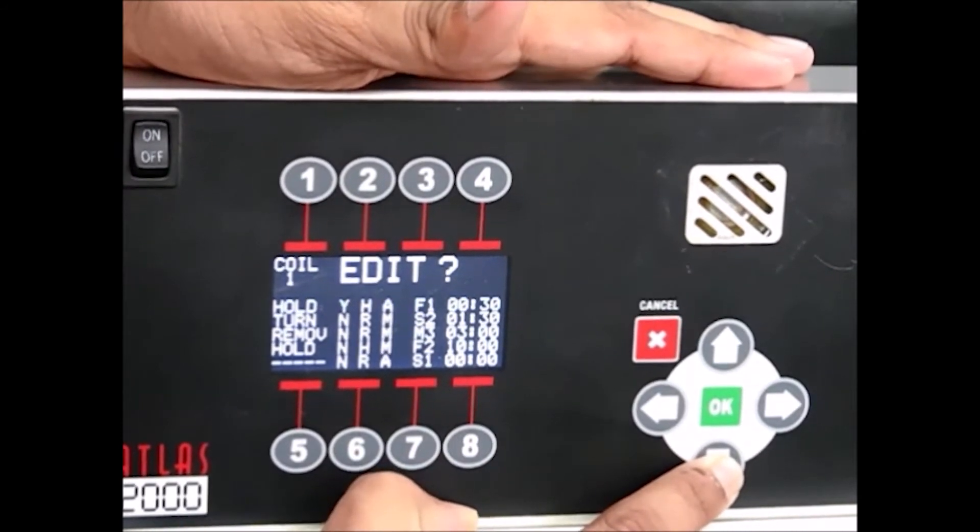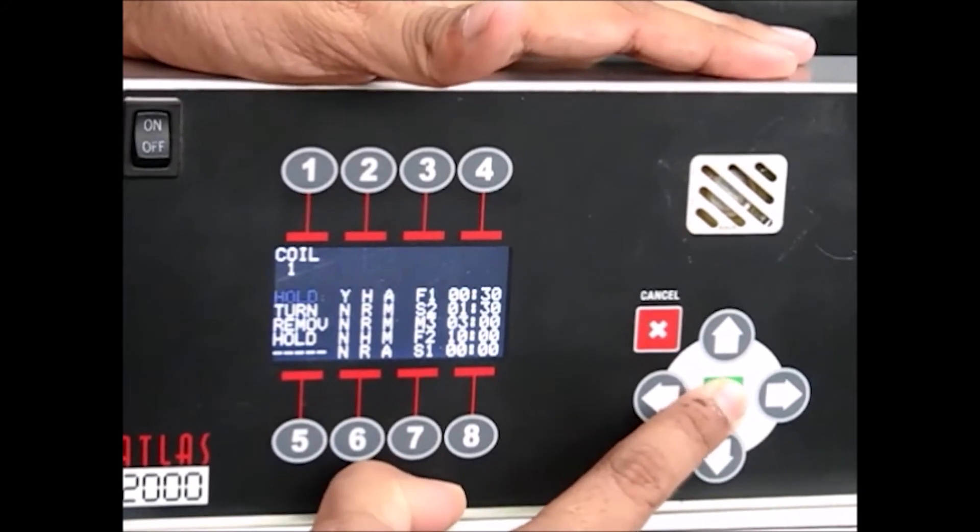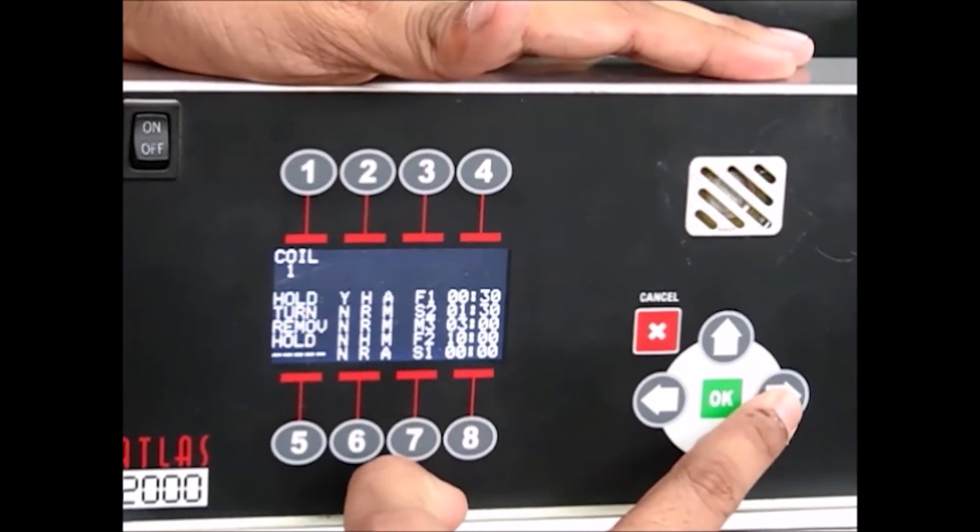To select the submenu to edit, move the cursor past the item name to a submenu using the down button. Press OK.